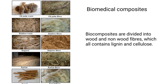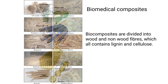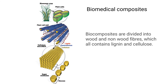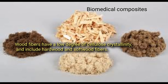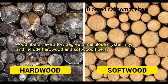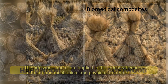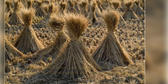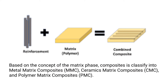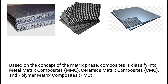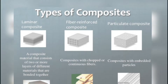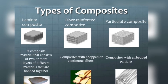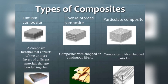Biocomposites are divided into wood and non-wood fibers, which all contain lignin and cellulose fibers. Wood fibers have a low degree of cellulose crystallinity and include hardwood and softwood fibers. Non-wood fibers are applied in the industry because of good mechanical and physical properties. Based on matrix phase, composites are classified into metal matrix composites, ceramic matrix composites, and polymer matrix composites. By reinforcement type, they are classified into fibrous, particulate, and laminate composites.